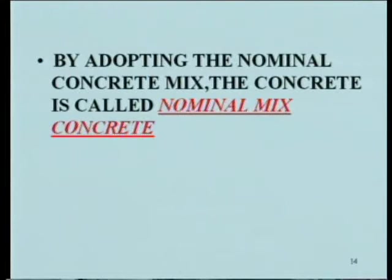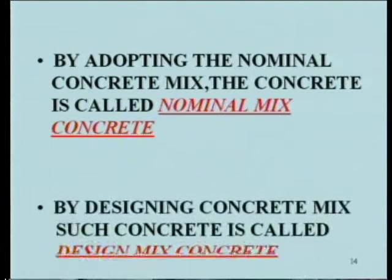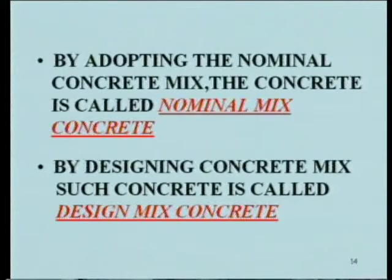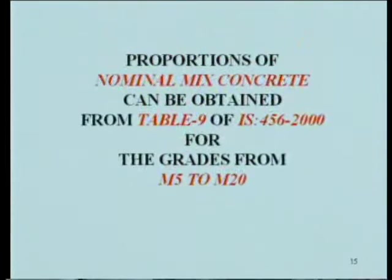Nominal mixed concrete is that in which proportioning of ingredients is done just by experience, without going through scientific methods of calculations and without taking into consideration the various properties of ingredients. By past experience, nominal mixed concrete can be selected and prepared. By designing a concrete mix through scientific methods, the concrete produced is called designed mixed concrete. Proportions of nominal concrete mix can be obtained from table 9 of IS 456-2000 for the grades from M5 to M20. Nominal mix can only be used for lower grades of concrete between M5 to M20.